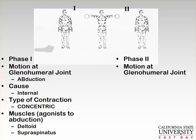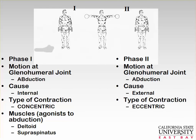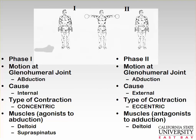In phase 2, the motion is adduction. The cause is external — controlling gravity and the lowering of the weights — which is always an eccentric contraction. The muscles active are the antagonists to adduction, which is another way of saying the abductors: the deltoids and supraspinatus. So the deltoids and supraspinatus concentrically contract on the way up, and eccentrically contract on the way down.